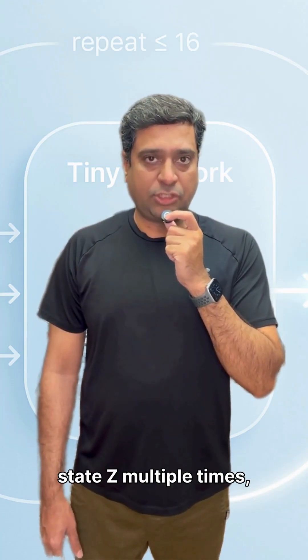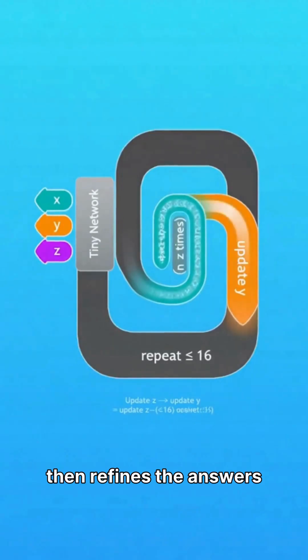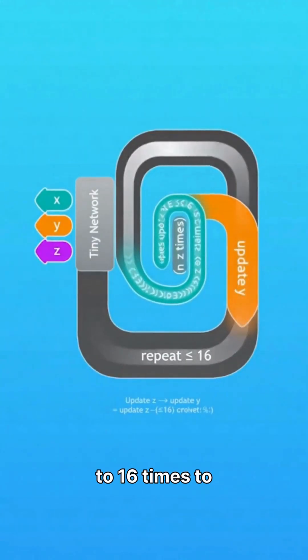TRM updates its latent state Z multiple times then refines the answers while repeating it up to 16 times to improve accuracy.